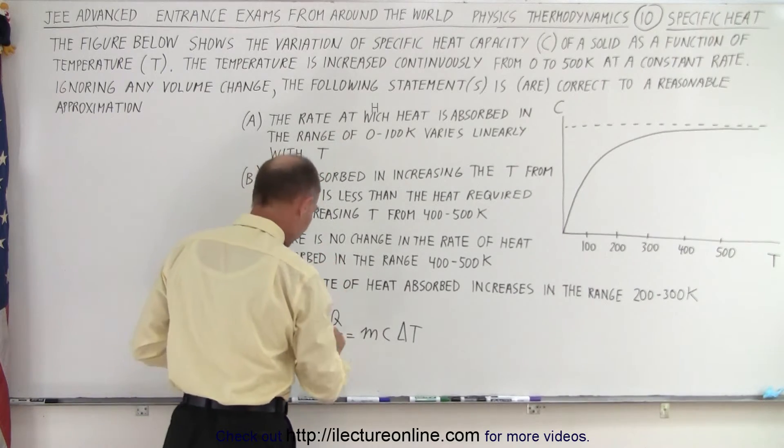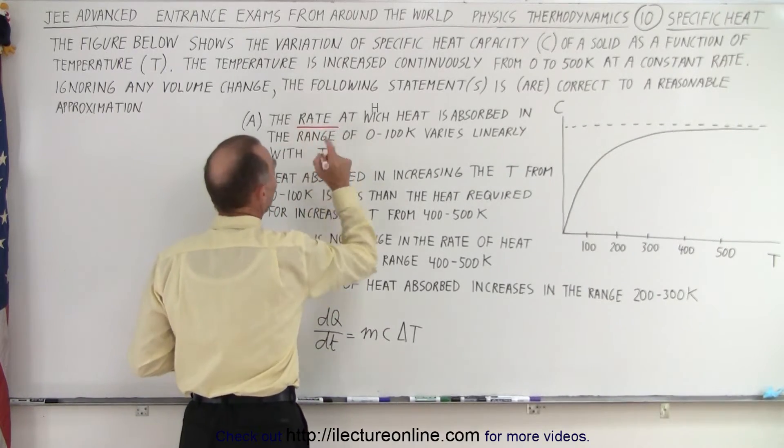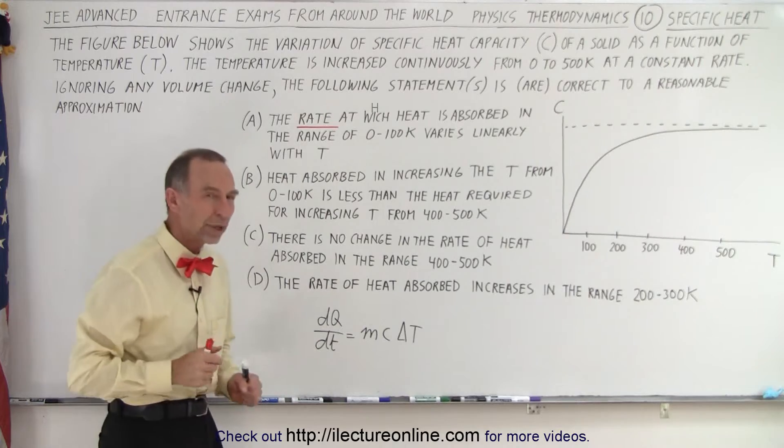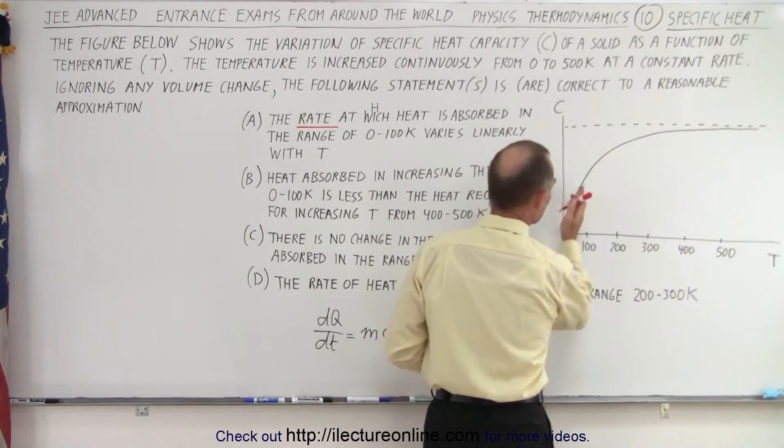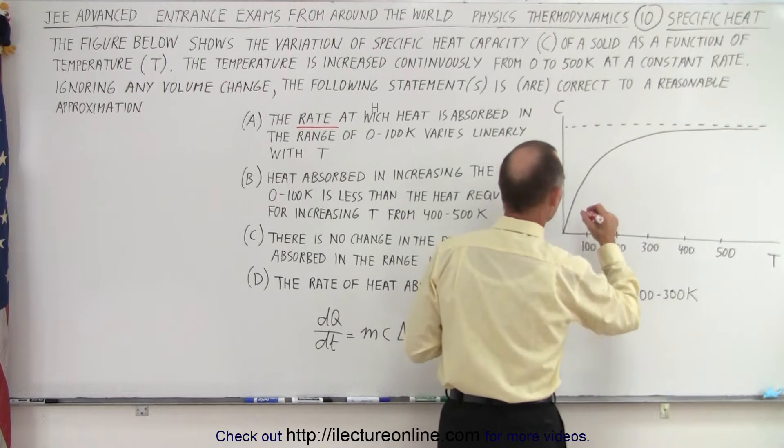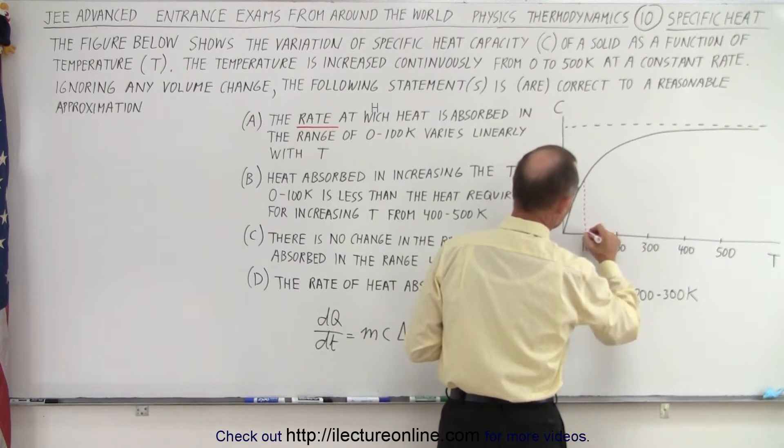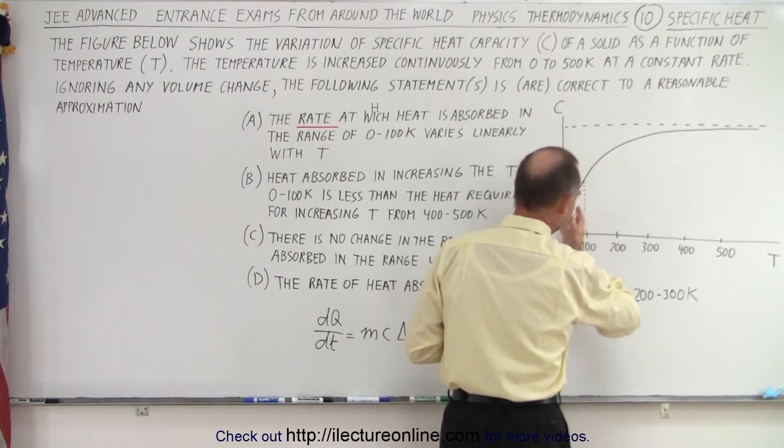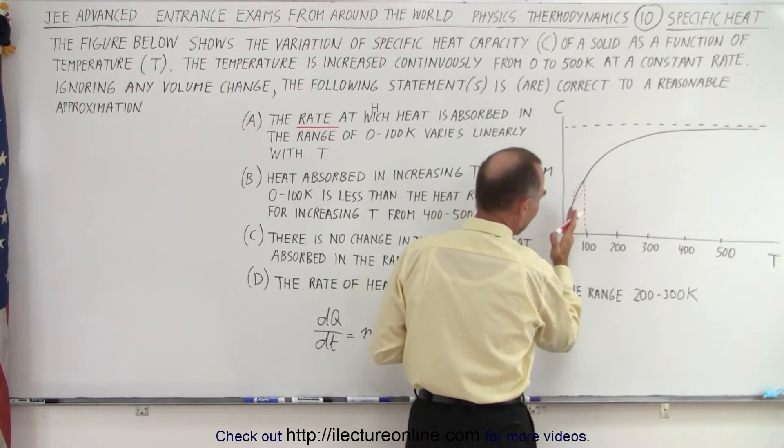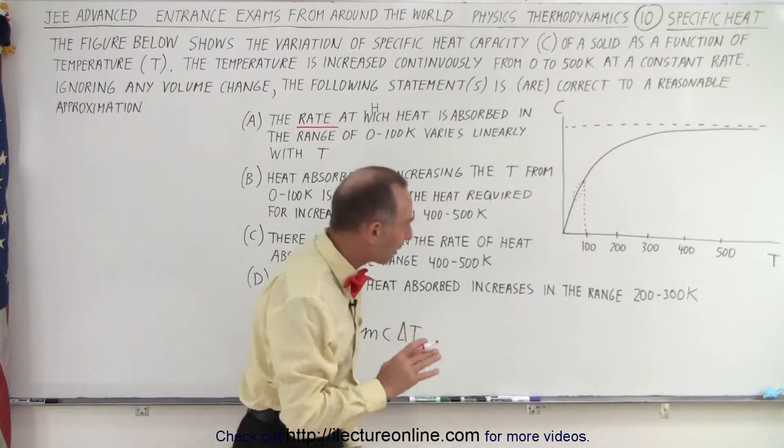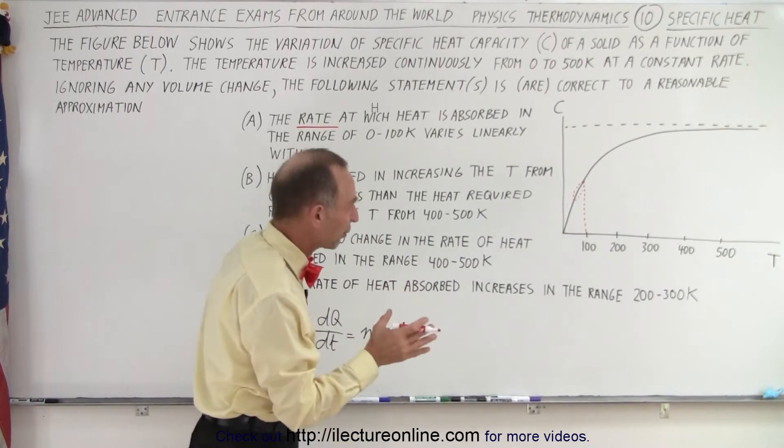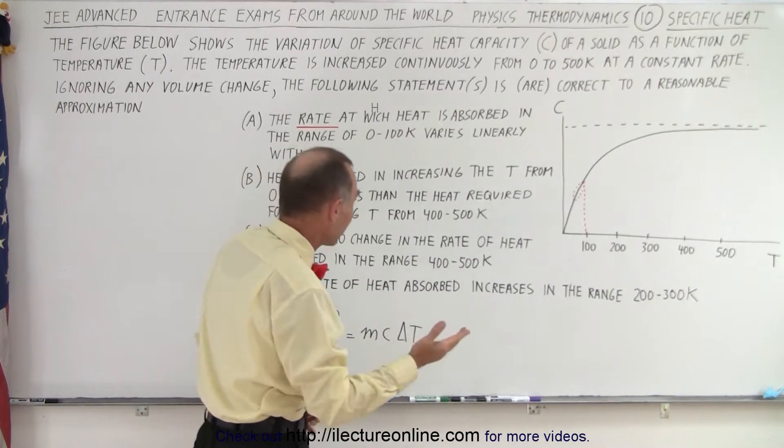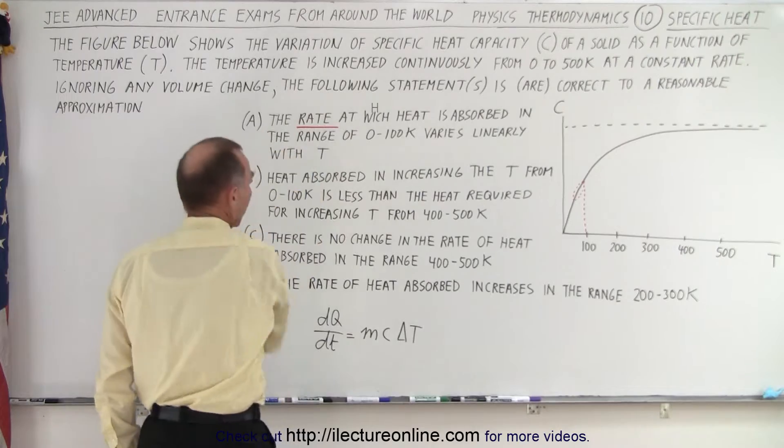The rate, and remember it talks about the rate, so it's important, the rate at which heat is absorbed in the range of 0 to 100 K varies linearly with T. So is this a linear function for the first 100 K? And if I drop a line down here, you can see that at the very end the slope begins to vary. This is essentially a straight line and then begins to curve. But it's barely a curve. It's just almost imperceptible. So now, is the answer correct or is it not correct? So that's why they said to a reasonable approximation.